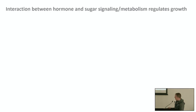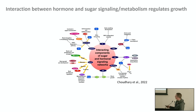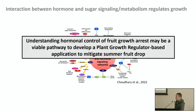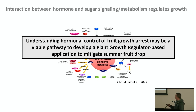In the literature and basic model plant systems, interactions between hormone and sugar signaling and metabolism are known to be important for regulating growth. For example, auxin interacts with sugar signaling, as do ethylene, abscisic acid, and jasmonic acid. Therefore, we predict that the best pathway forward to manage summer fruitlet abscission is by understanding the hormonal control of fruit growth arrest and then developing a plant growth regulator-based application to manage this problem.